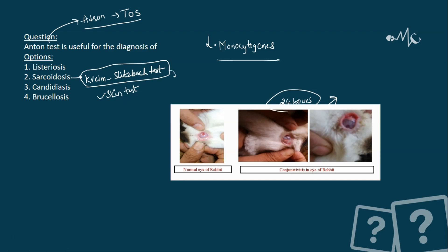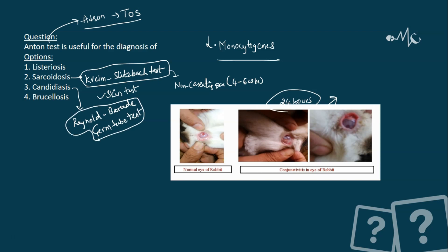After injection, non-caseating granuloma development occurs, and it takes four to six weeks — that is the Kveim-Siltzbach test. For candidiasis, there is the Reynolds-Broday phenomenon, otherwise known as the germ tube test, which is characteristic of Candida and helps in differentiating Candida albicans from other species. For brucellosis, there is no named or ant test.